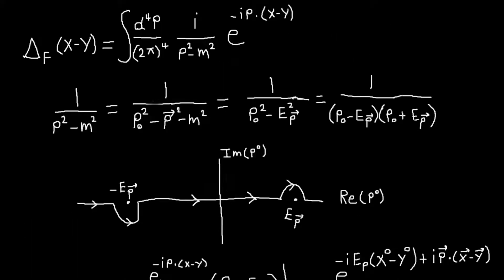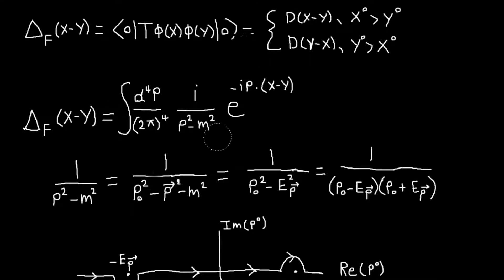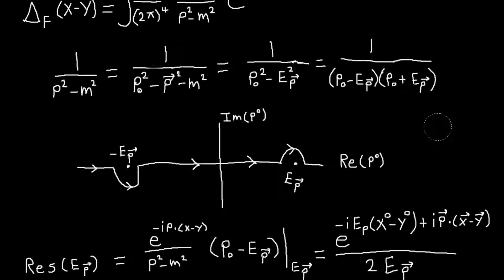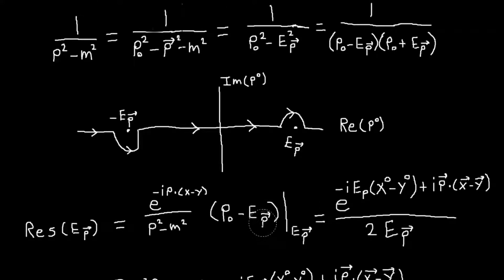So to do that, we just take our integrand, which I'll just associate the i and the 2pi to the floor just with the other integrals. So the integrand of the p^0 integral would just be this thing divided by this. And so to evaluate the residue, we just multiply by this factor here. It's kind of, hopefully you've seen, basically just the basic example of the residue theorem. It's not a tremendously difficult complex analysis here. So you just multiply by this thing and then evaluate at that point, E_p.